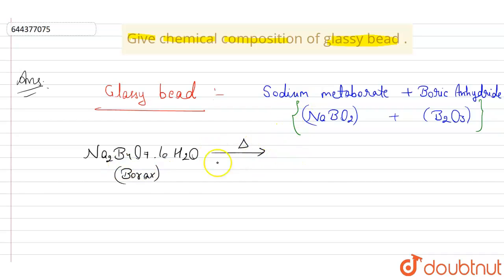When we heat borax, it loses water and swells into a white mass. This white mass is Na2B4O7, and now this white mass is again heated.